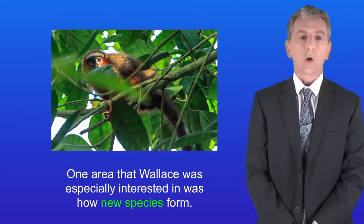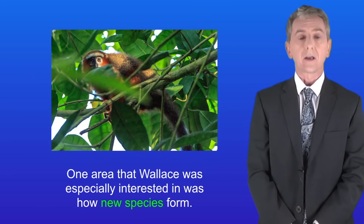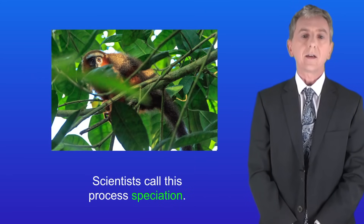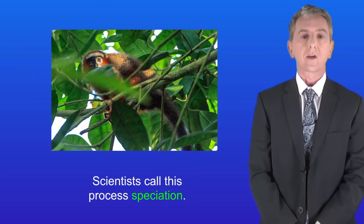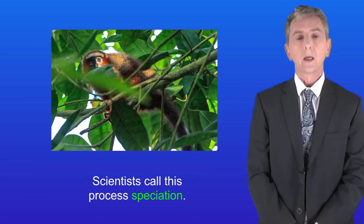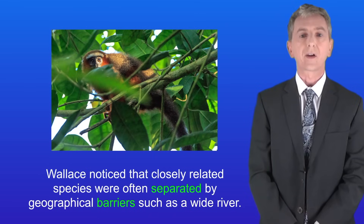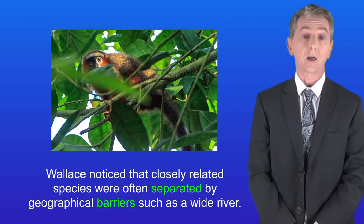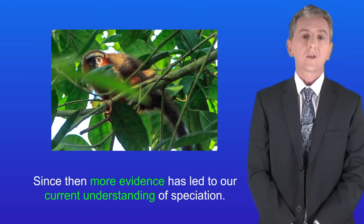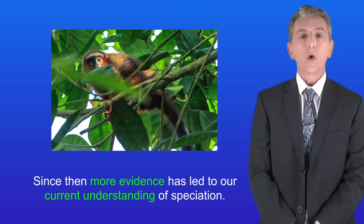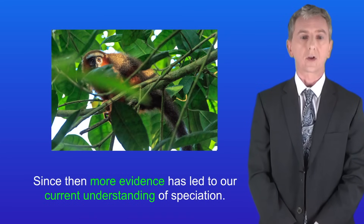Now one area that Wallace was especially interested in was how new species form. Scientists call this process speciation. Wallace noticed that closely related species were often separated by geographical barriers, such as a wide river. Since then more evidence has led to our current understanding of speciation.